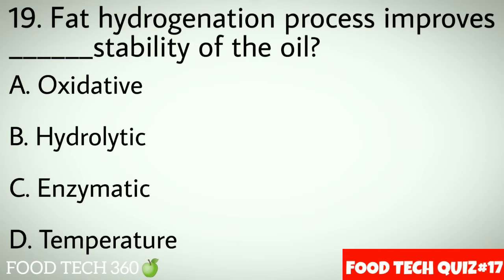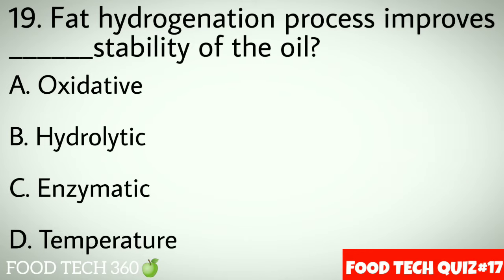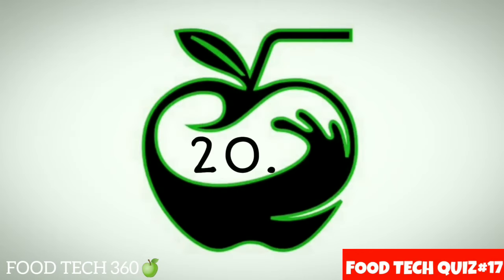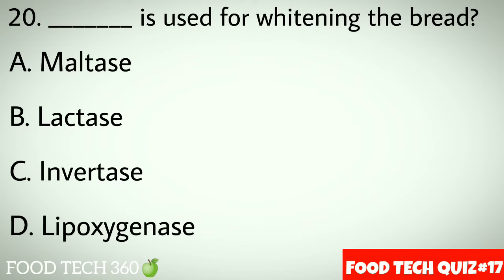Question number 19: Fat hydrogenation process improves dash stability of the oil. Options: A. Oxidative, B. Hydrolytic, C. Enzymatic, D. Temperature. Correct answer: A. Oxidative.